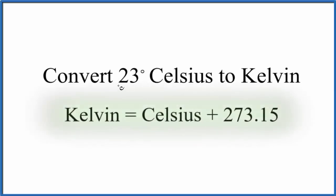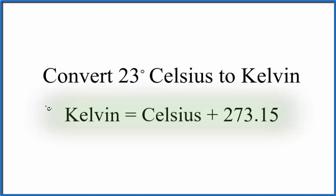Let's take a look at how to convert 23 degrees Celsius to Kelvin. To do that we can use this equation right here. This is really useful — you should probably remember it. It works when we have Kelvin and want to know Celsius, or if we have Celsius and want to convert to Kelvin.